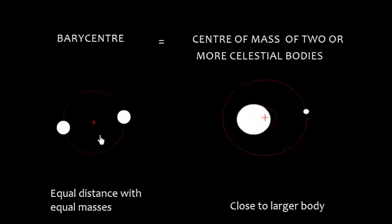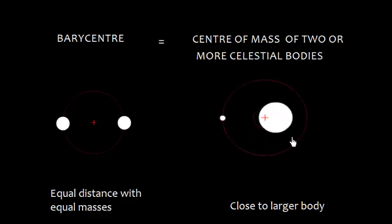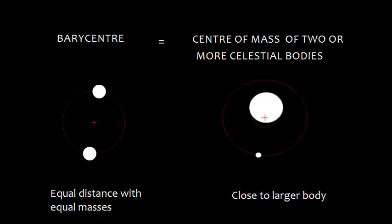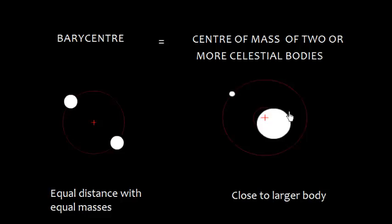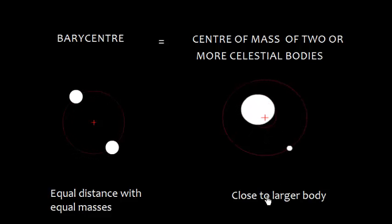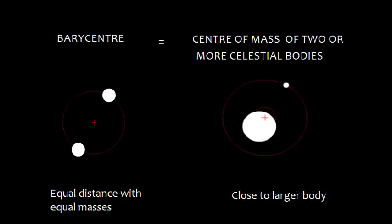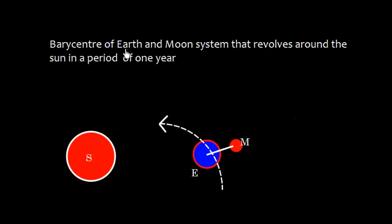When the masses of two bodies are different, the Barycenter will lie closer to the larger body. It is actually the Barycenter of the Earth-Moon system that revolves around the Sun in a period of one year.